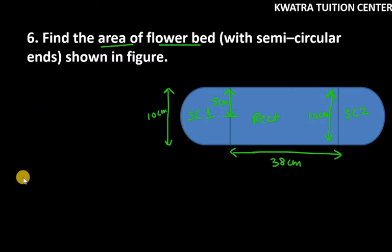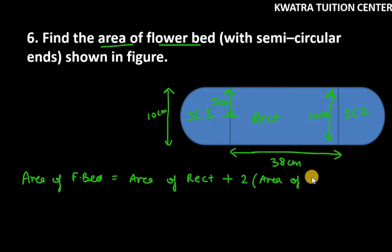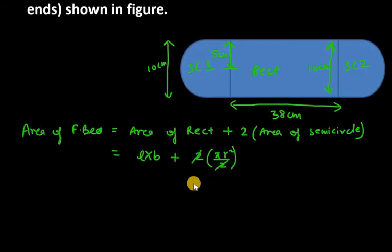So area of flower bed is equal to area of rectangle plus twice the area of semicircle, because semicircle is the same on both sides and their radius is the same. So area of rectangle is length into breadth plus twice of pi r squared over 2. You can cancel 2 with 2, so you get